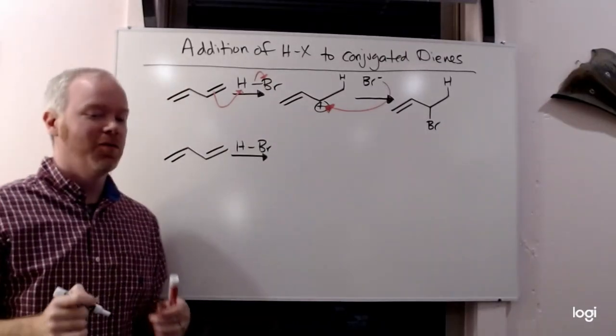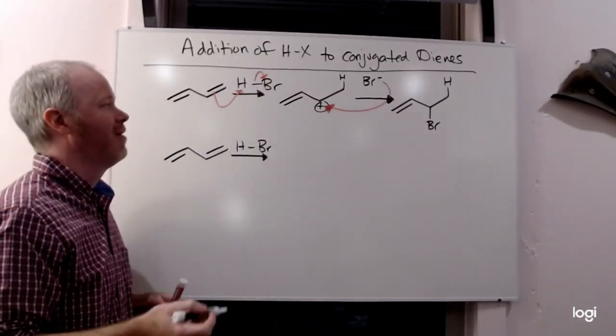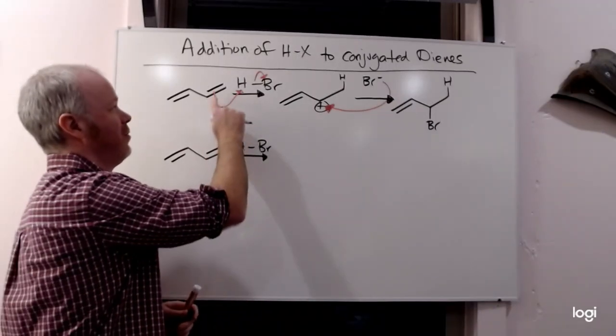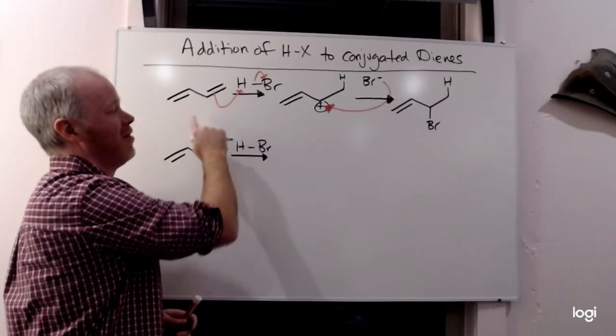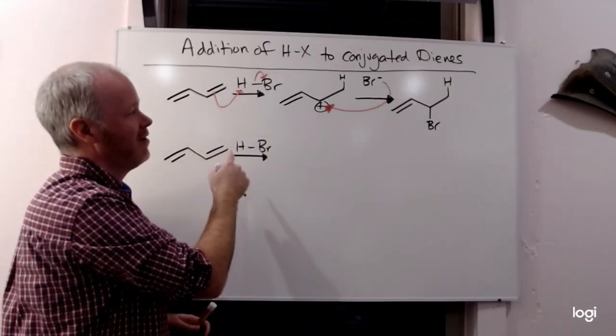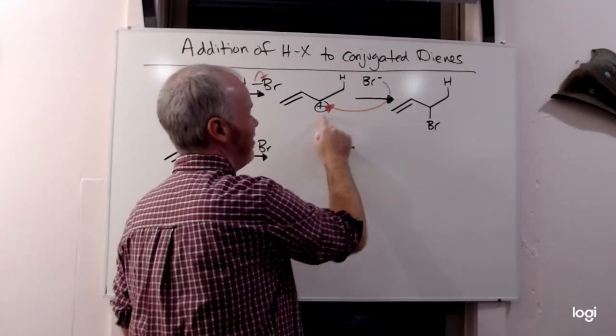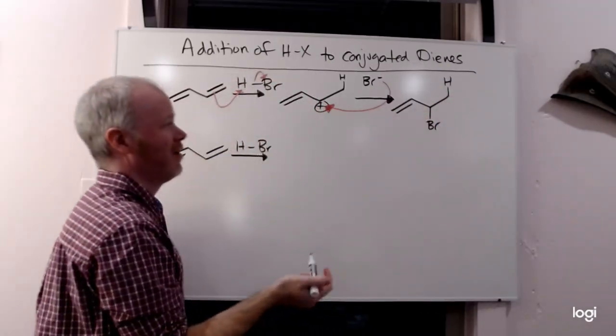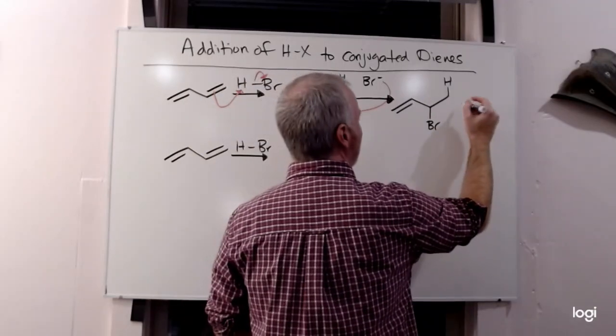So this is what we would expect to happen with no changes. Just a simple alkene addition to one of our pi bonds here. The nucleophile adds to the more stable carbocation. Then we get a hydrogen and a bromine where the alkene were. This is called 1,2-addition.